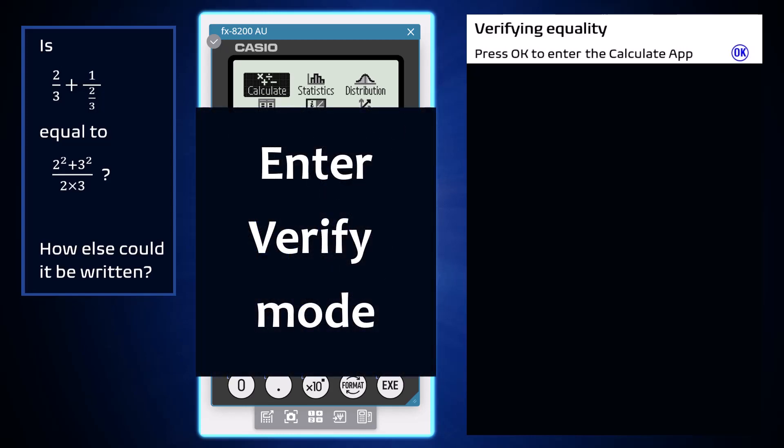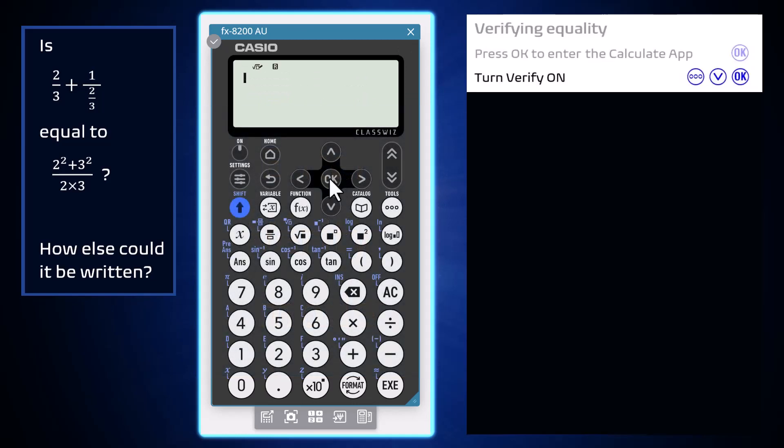To set the Calculate app into verify mode, press the tools key, arrow down, and press OK to turn verify on. Once this is done, you will see a tick appear at the top of the screen with this setting.